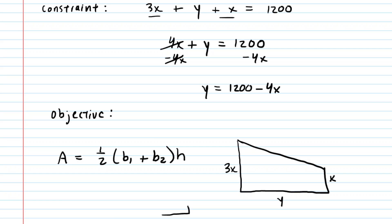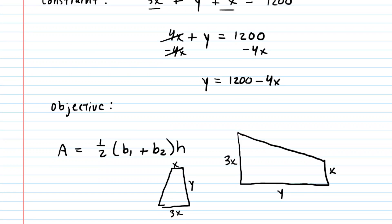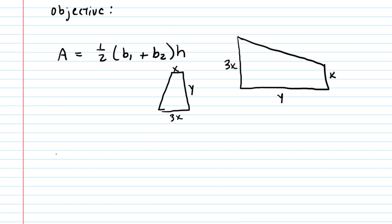If it helps, you can visualize the trapezoid as oriented more in this manner. And so you can see more clearly that the y would be the height, and then we have the 3x and the 1x. But in any event, we're going to plug in for base 1, base 2, and height using our variable labels. So for base 1, we're going to have 3x, base 2 is 1x, and then the height is y. We can simplify this. We add the 3x and the 1x to get 4x. And then half of 4xy is just 2xy.